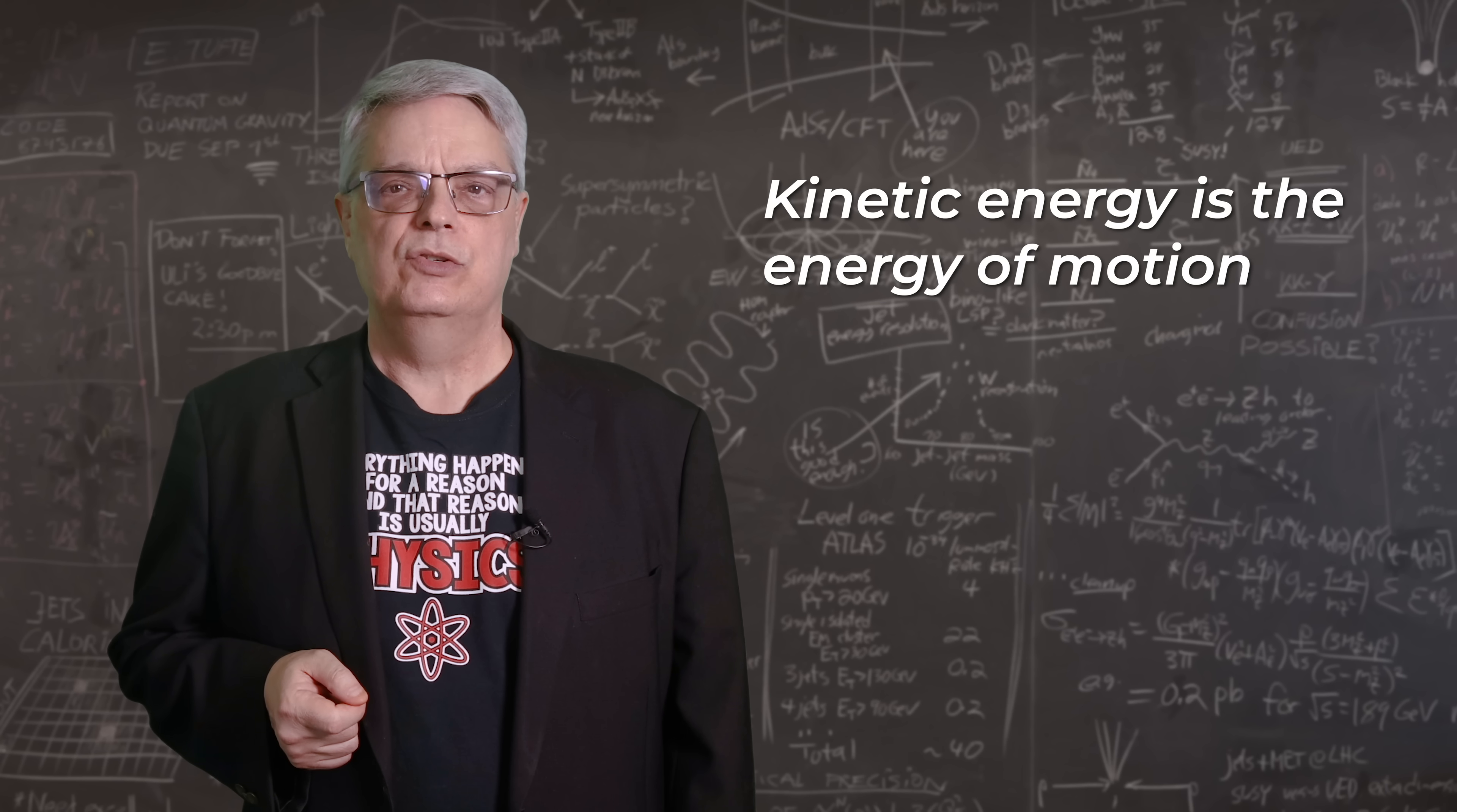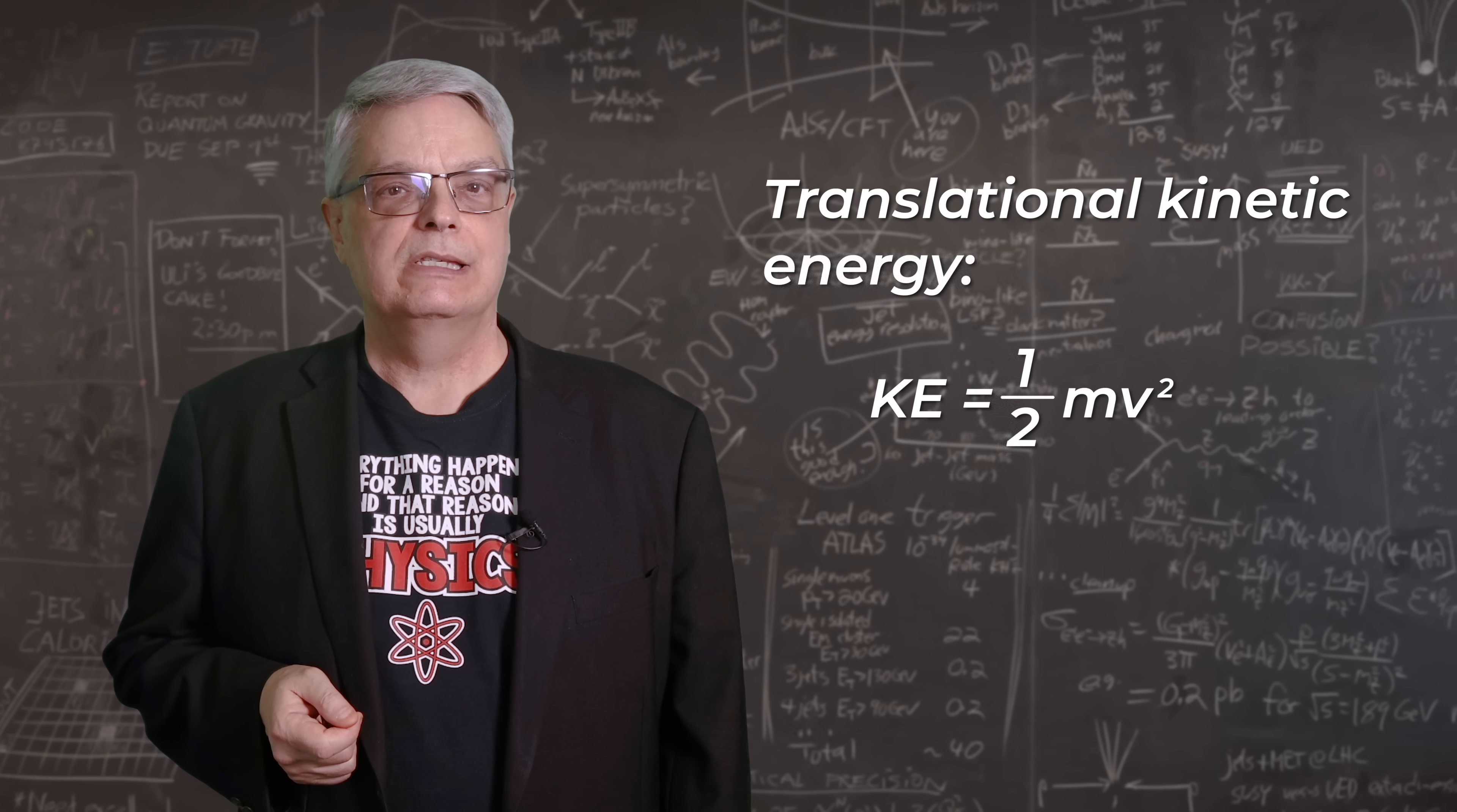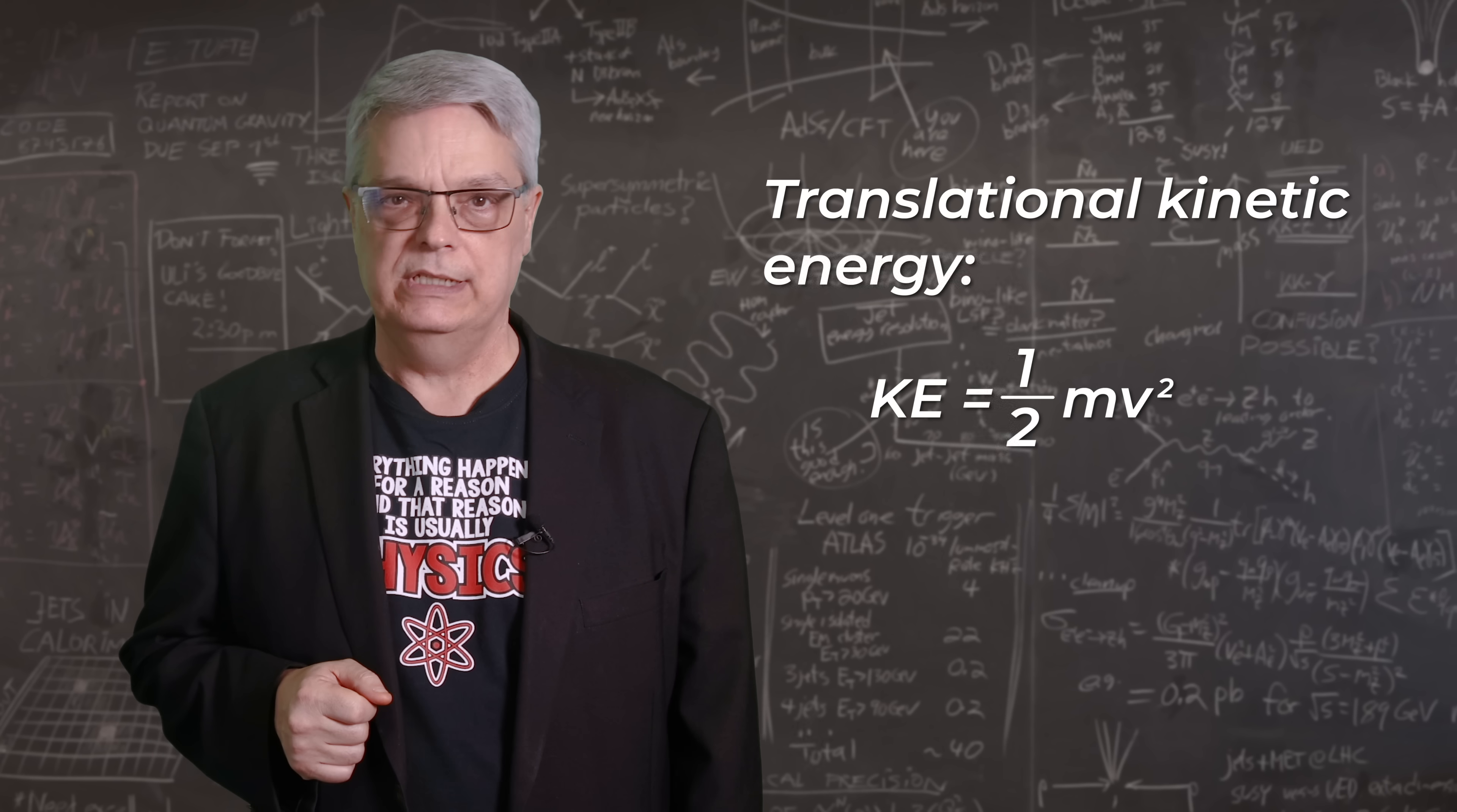The first kind of kinetic energy you learn about is translational energy. If you have an object of mass m with a velocity v, then the translational kinetic energy is one-half mv squared. By the way, a future video will explore that equation in much more detail.